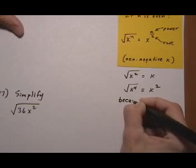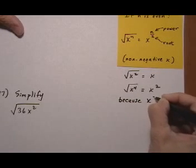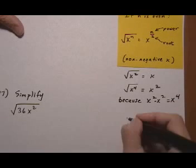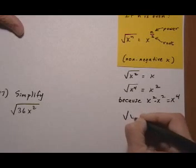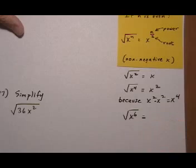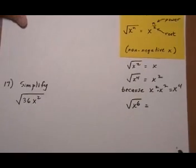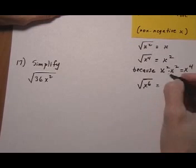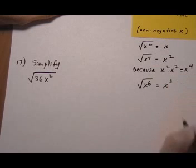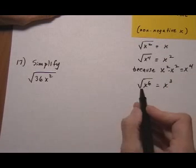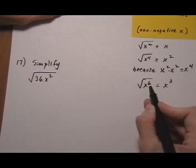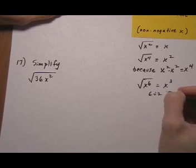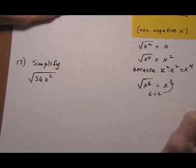And again, that's because x squared times x squared equals x to the fourth. So x to the sixth — let's look at that. Square root of x to the sixth. So what item multiplied by itself is going to give us x to the sixth? It'll be x cubed. The square root of x to the sixth — as soon as you do the root, you divide the power by 2. So we're doing 6 divided by 2, and that gives us a 3.